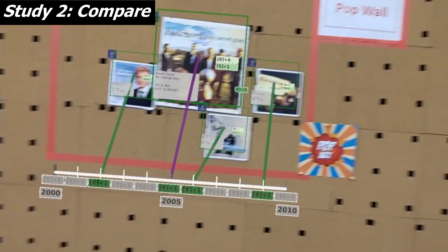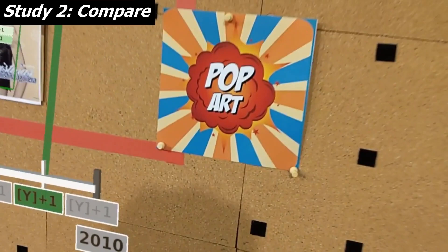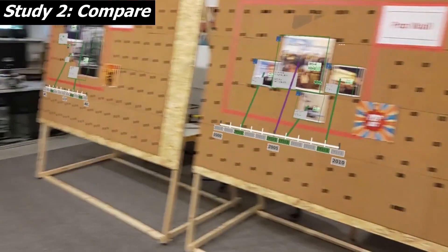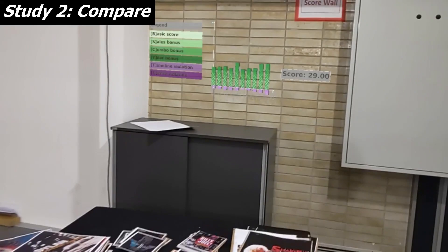To compensate for drift over time, the participant can look at the pop art to re-align the wall. Furthermore, he can check his score on the score wall, being placed on the back side of the room, which is actually 29.